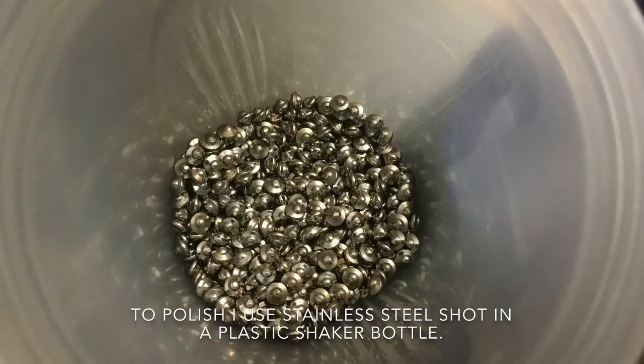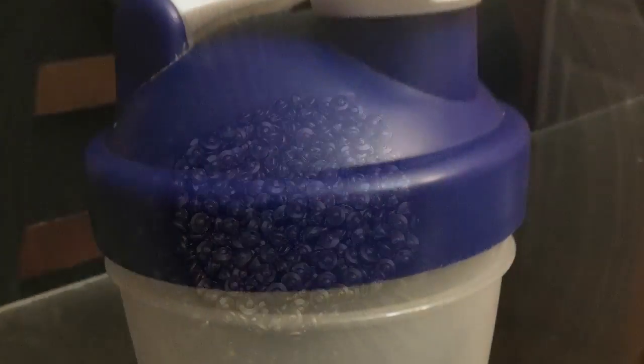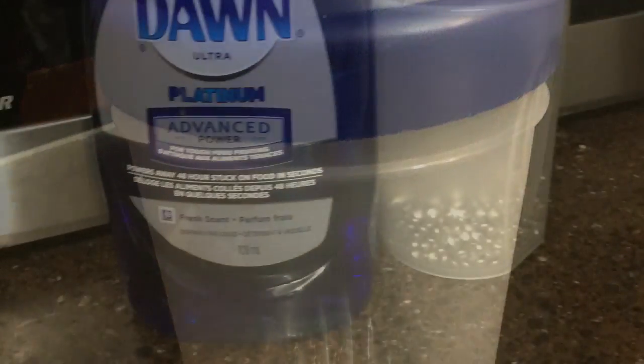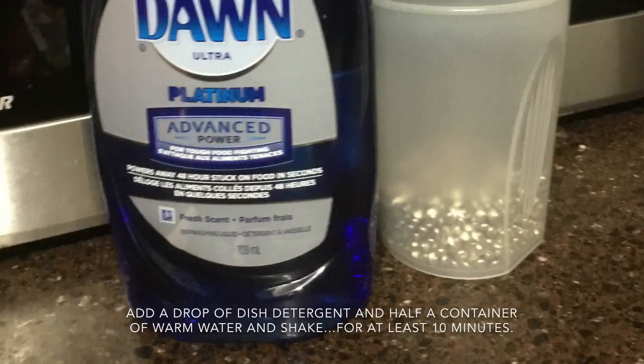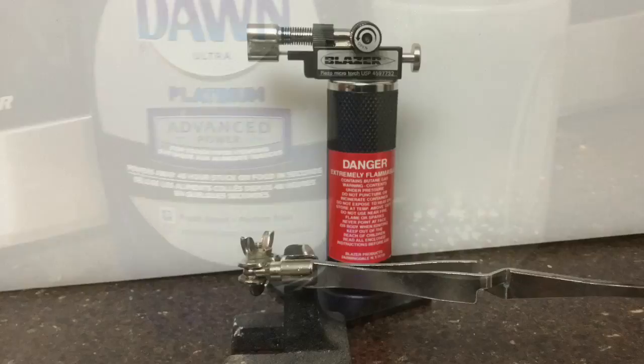Then you need to polish it. I like to use stainless steel shot. And since I don't have a fancy tumbler, I just put it in a shaker, a plastic shaker container, and just shake and shake and shake. Before I do it, you have to add about half the container filled with water, a drop of Dawn, and just shake.